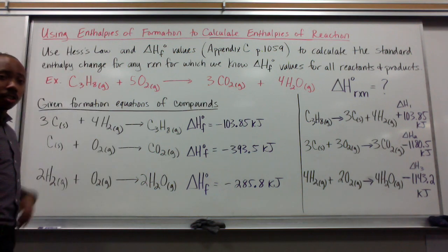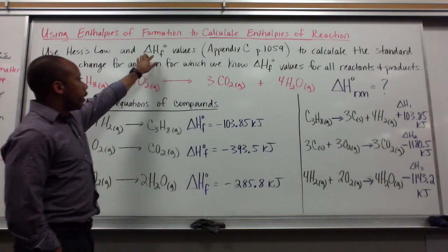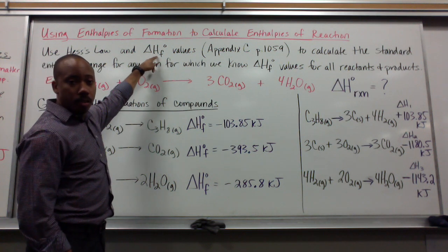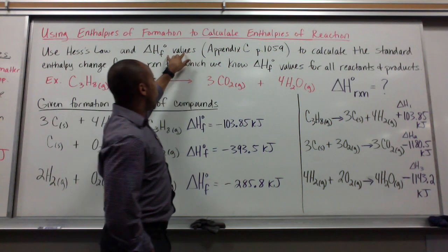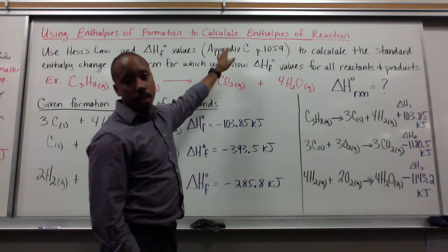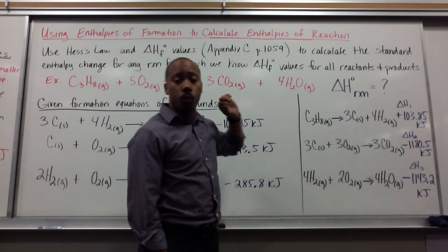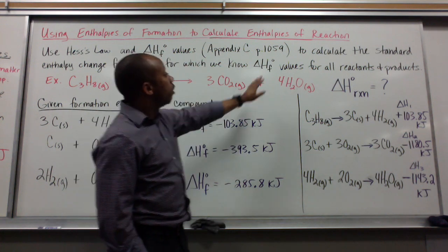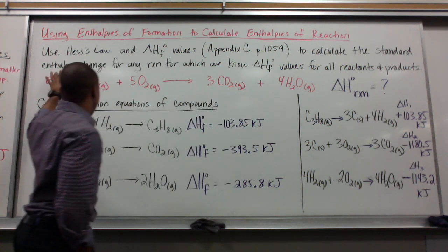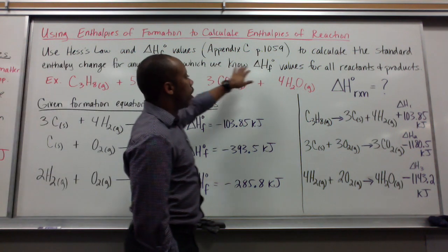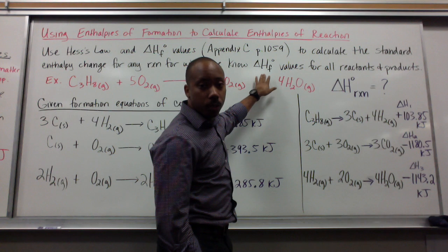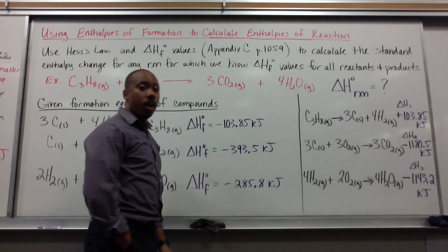So we can use Hess's law and the enthalpy of formation, the standard enthalpy of formation, values, and we get these values from Appendix C, which is in your book on page 1059, to calculate the standard enthalpy change for any reaction for which we know our delta H sub F⁰ values for all reactants and products.